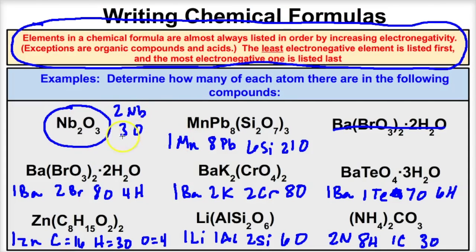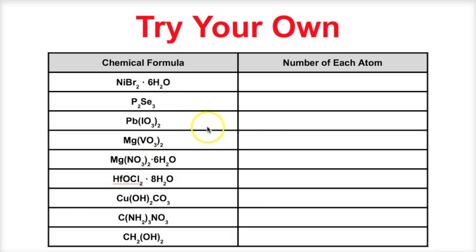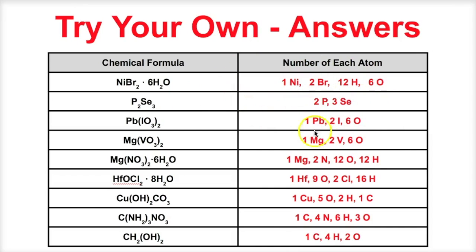That's how you determine how many atoms of each type are in a given compound. Now let's take a look at some examples you can try on your own. Pause the video and determine the number of each atom in each of these compounds — for the first example, figure out how many nickel atoms, bromines, hydrogens, and oxygens there are. Here are the answers: that compound has one nickel, two bromines, twelve hydrogens, and six oxygens. If you got these right, you know how to determine how many atoms there are in a given chemical formula.